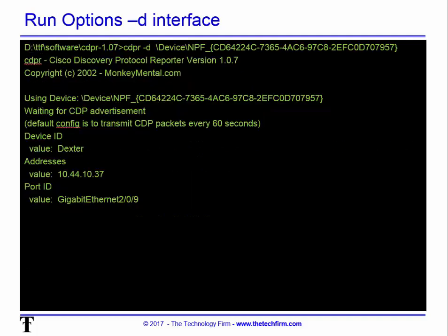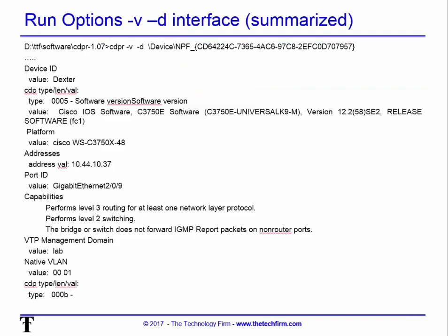If you want to skip the interactive prompt — for example when running this in a script or remotely on a customer's computer — you can use the '-D' option followed by the full interface string. Don't just type the number eight; it won't work. With '-D' and the full interface string, CDPR immediately listens and provides the information, which is great for scripting or having someone else run it remotely.